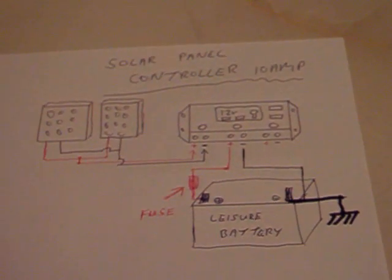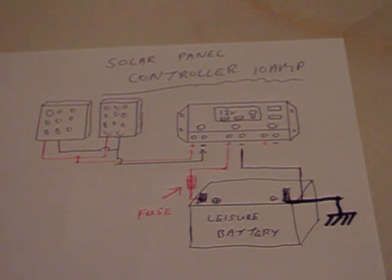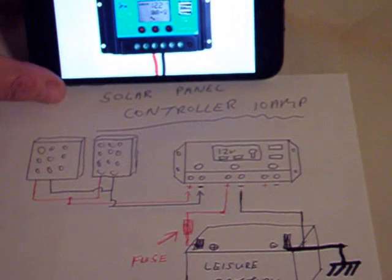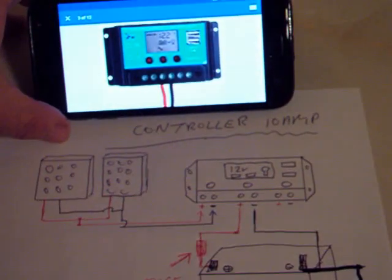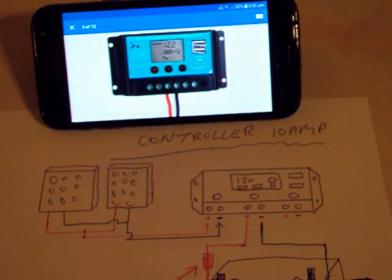It is actually advertised as a 10 amp controller. The problem with that is when it arrived with the two solar panels and the wiring it was fused with a 7.5 amp fuse. Now to me if it is a 10 amp controller it should have at least a 10 amp fuse with it. So I queried it with the supplier and the manufacturer and they basically said for extra safety reasons we only supply it with a 7.5 amp fuse.